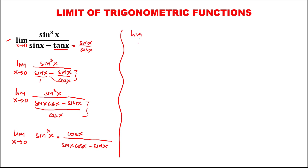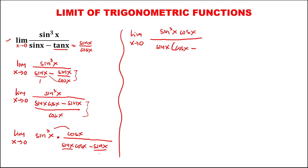We have the limit as x approaches 0 of sine to the power 3x times the reciprocal of the denominator, which is cosine x, over sine x cosine x minus sine x. We can combine terms and observe that in the denominator there is a common factor — we can put sine x outside, leaving cosine x minus 1 remaining.